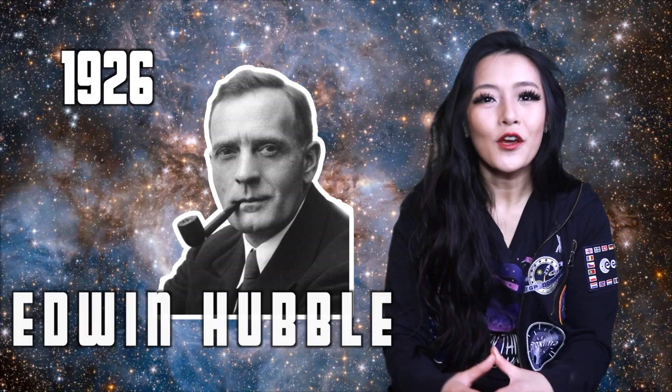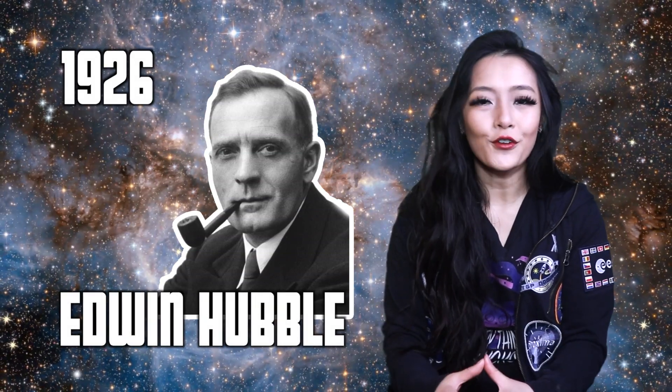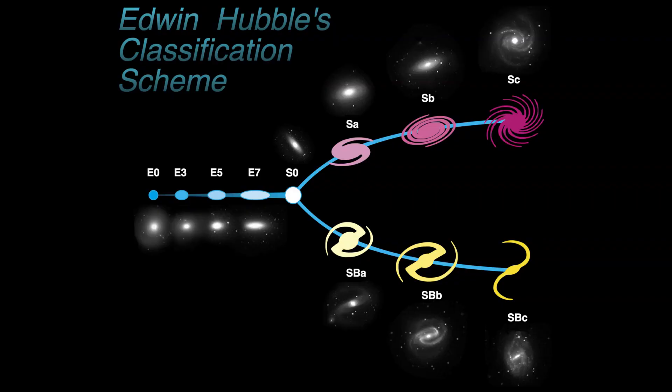In 1926, Edwin Hubble developed the Hubble Tuning Fork, a classification scheme to sort different types of galaxies according to their shapes. This diagram would essentially split galaxies into two main types: elliptical galaxies and spiral galaxies. The elliptical galaxies are located on the left hand side of the diagram and are represented by a series of ovals ranging from E0 to E7.